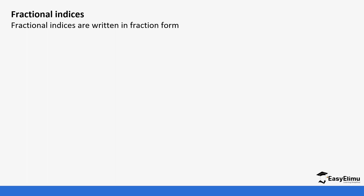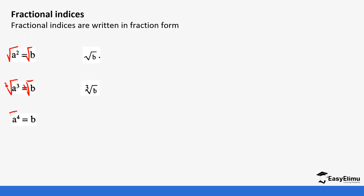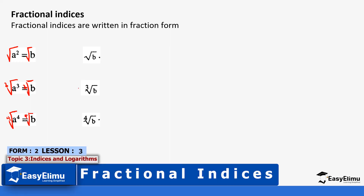We are going to go back a bit on cube root, fourth root, and fifth root. If you get the square of a equals b, it means that's the same as the square root of b — you square both sides, as we've seen in Form One work. If it's a cube, you do the cube root, and if it's a fourth power, you do the fourth root on both sides to get the fourth root of the value.